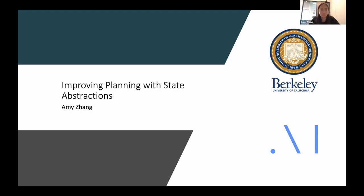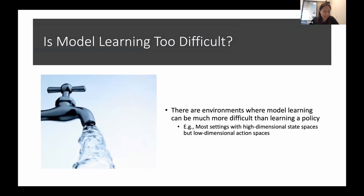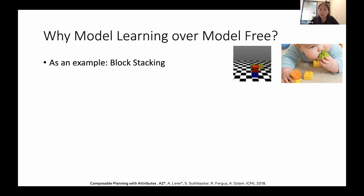Thank you for the very nice introduction and for organizing this workshop. I think it's a really exciting topic. Today I'll be talking about how we can improve planning with state abstractions. I just want to start by asking the question—I think this is often a debate that comes up between model-free and model-based: is model-free learning or is model learning too difficult? I think we can definitely think of examples where model learning can be much more difficult than just learning the model-free policy. Here I have an example on the left-hand side of pouring water. We know modeling these fluid dynamics is incredibly difficult, whereas training a model-free policy to pour water from a pitcher into a cup is much more simple.